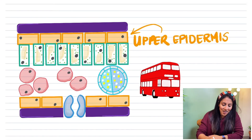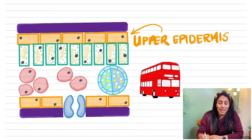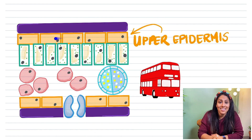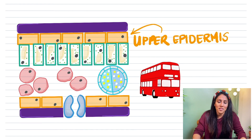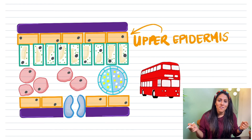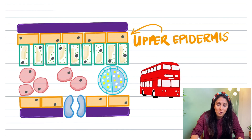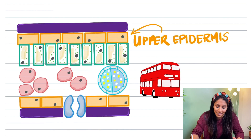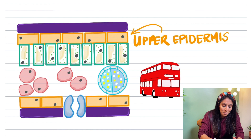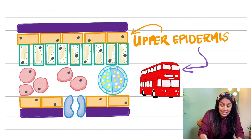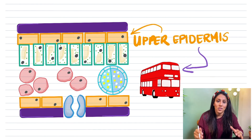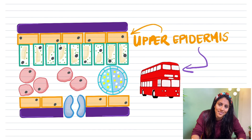The second layer at the top is the upper epidermis. Because I'm from the UK and we're famous for double decker buses, the upper deck of a bus is an analogy to help you remember the upper epidermis.